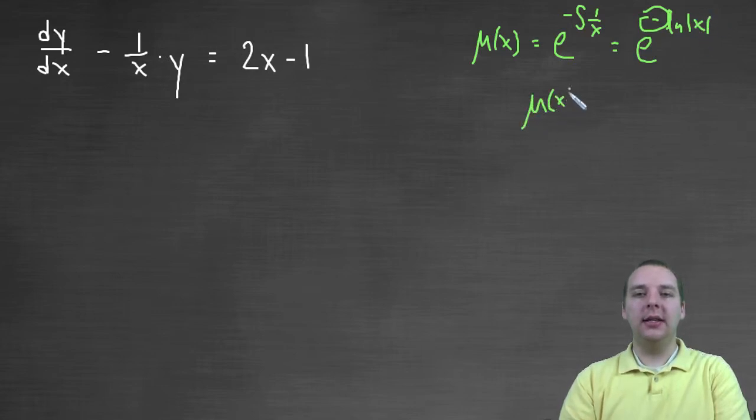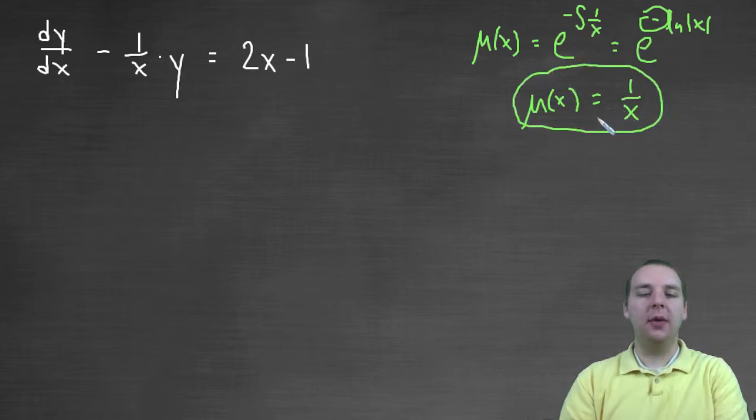And so μ(x), at the end of the day, once the e and the natural log cancel, you would get x to the negative one, or we could write it as one over x. So this is the guy who's going to fix a lot of our problems. Now he's not our answer or our solution to the differential equation. He's just going to help us.